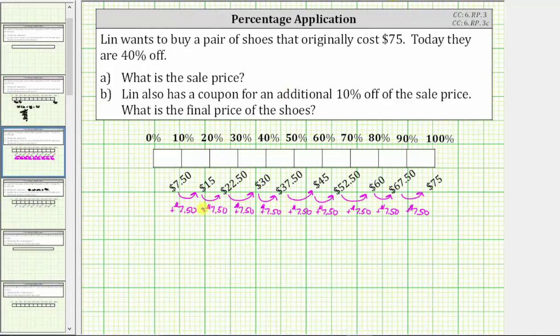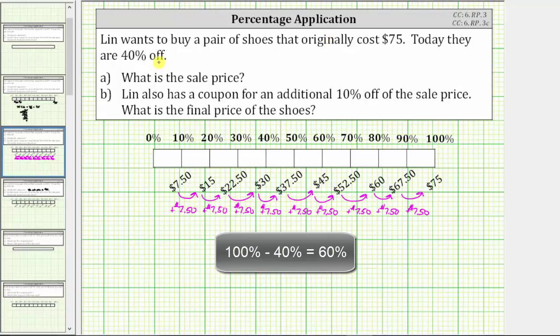And now to answer the question, if the shoes are 40% off today, that means Lynn pays 60% of the original cost.